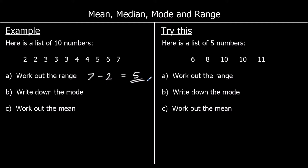The mode is the most common number, the number that appears most often. So which one appears most often? We've got three threes — we haven't got three of anything else — so three is the mode.